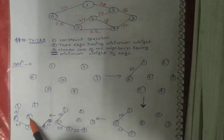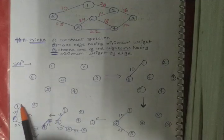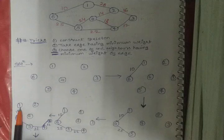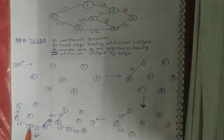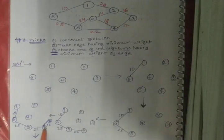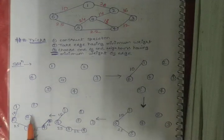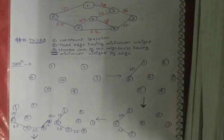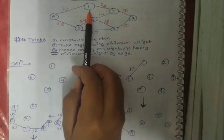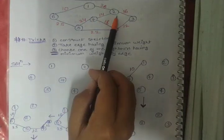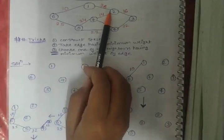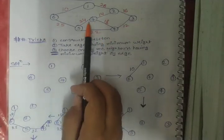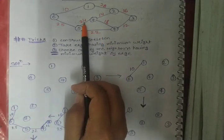We will see neighbor nodes of nodes 1, 5, 4, and 3 because those are connected up to this point. The neighboring node of node 1 is node 2 with edge value 28. The neighboring node of node 5 includes one already completed and one with edge value 24.